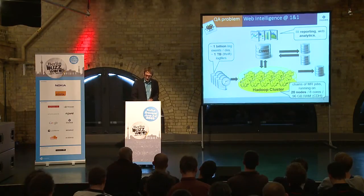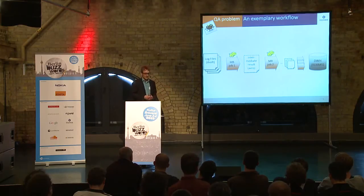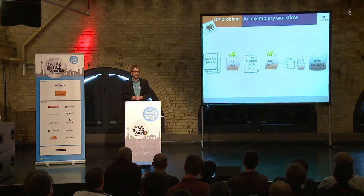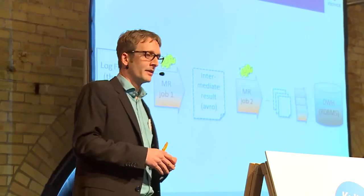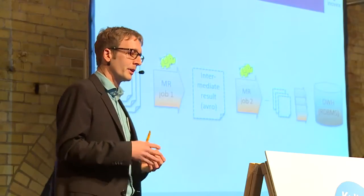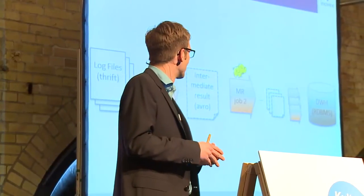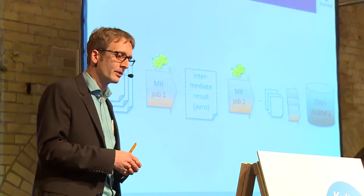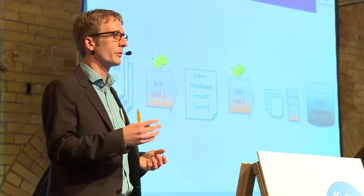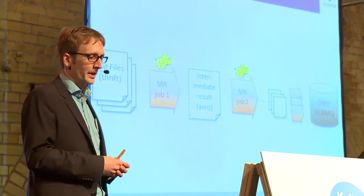We had those MapReduce chains. A typical chain has some kind of input data — in our case, log files from an ad server in the Thrift format. Then the first MapReduce job produces the first intermediate result. The second job does something with that result. At the end, we write the precious numbers into a data warehouse — Oracle in our case. Based on this data warehouse, tools like MicroStrategy let you build reports for your boss.